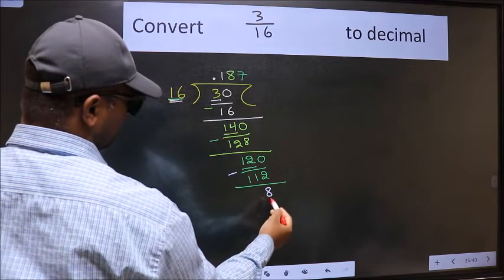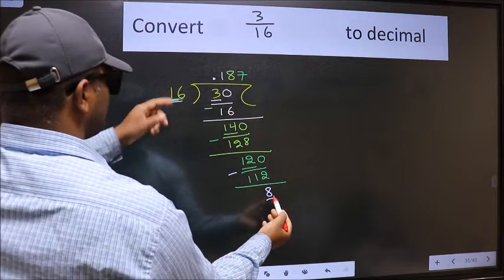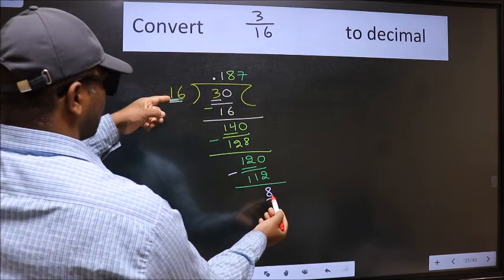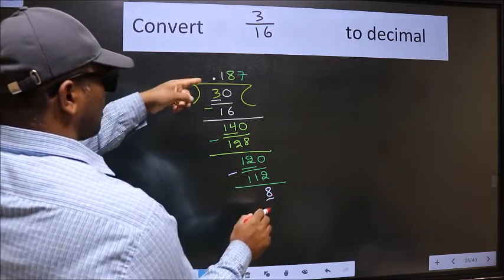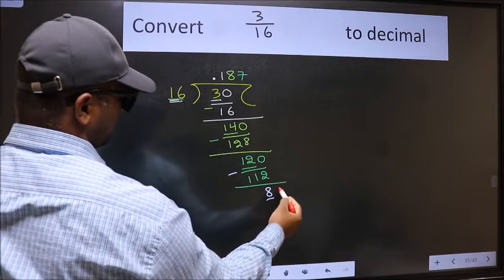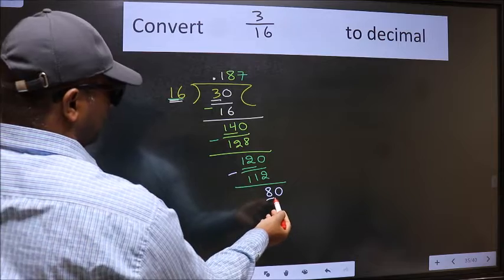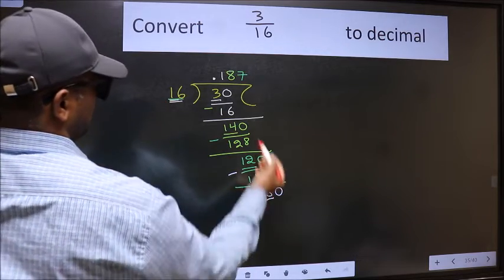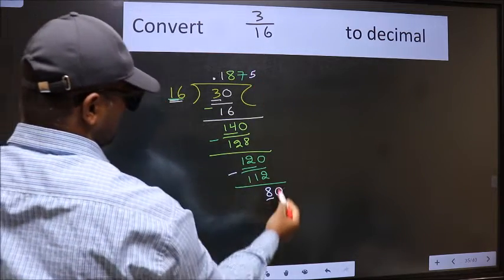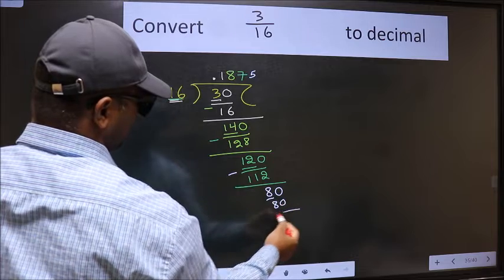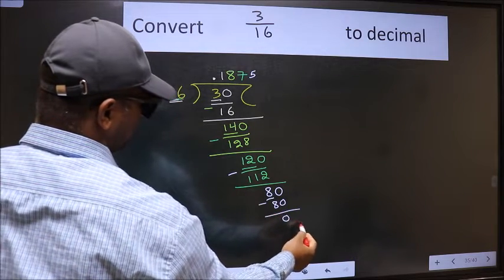Now we should subtract. We get 8. 8 and here 16. 8 is smaller than 16 and we already have the decimal. So directly we can take 0. So 80. When do we get 80 in 16 table? 16 five is 80. Now we should subtract. We get 0.